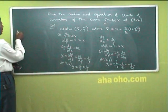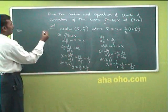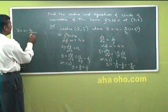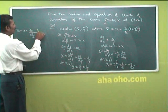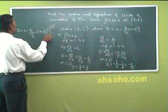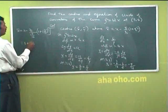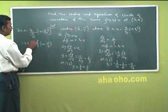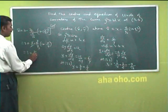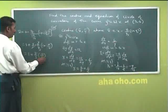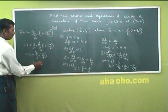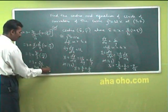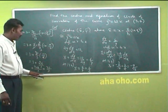Now compute x̄: x̄ = 3 − (y₁/y₂)(1 + y₁²) = 3 − [(3/2)/(−9/16)] · (1 + 9/4) = 3 − (3/2 · 16/9) · (13/4) = 3 + (8/3) · (13/4). Taking LCM: 3 + 26/3 = (9 + 26)/3 = 35/3. So x̄ = 35/3.